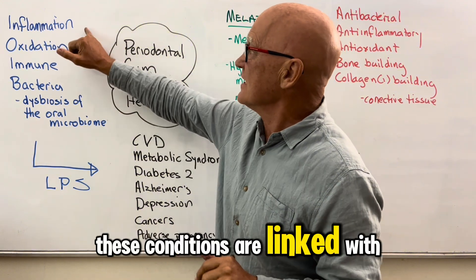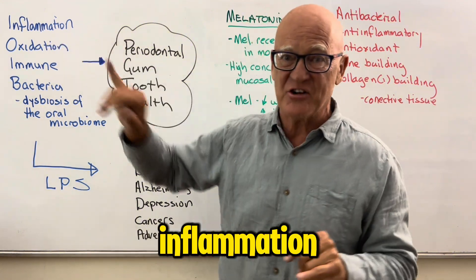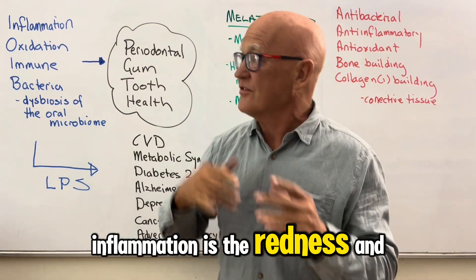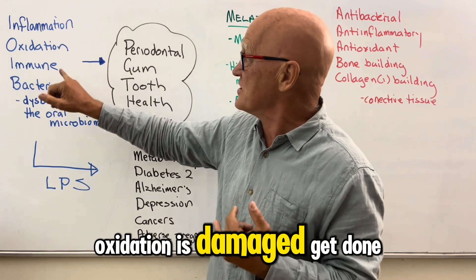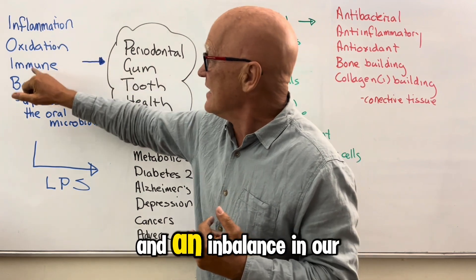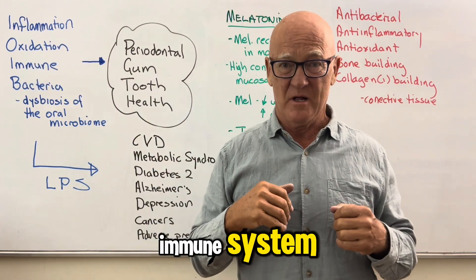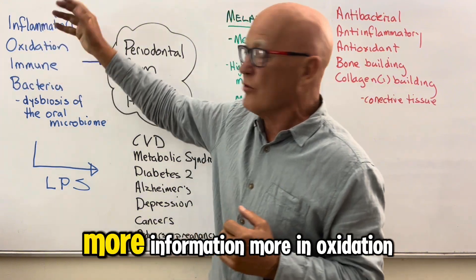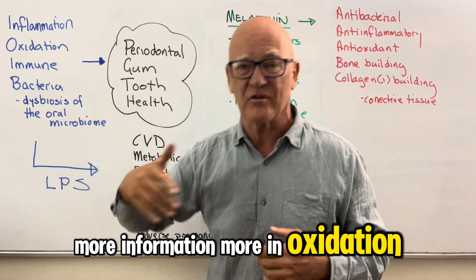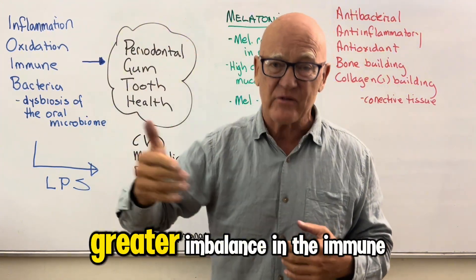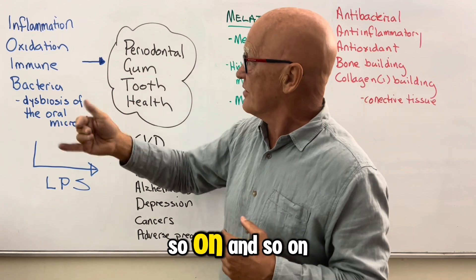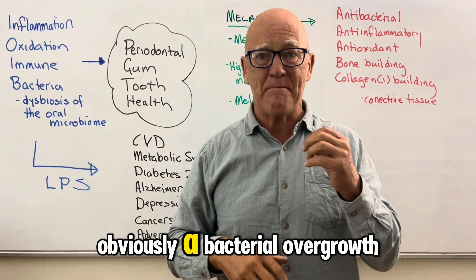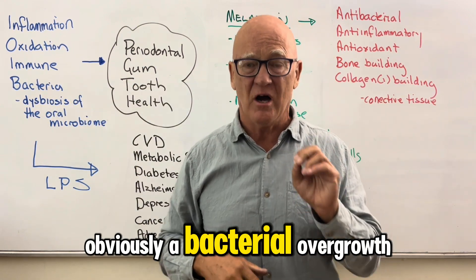These conditions are linked with inflammation — the redness and the soreness. Oxidation is damage being done and an imbalance in our immune system. And as a result, you get a vicious cycle: more inflammation, more oxidation, greater imbalance in the immune system, and so on. And this is linked with a bacterial overgrowth.